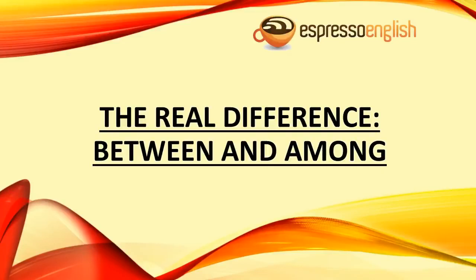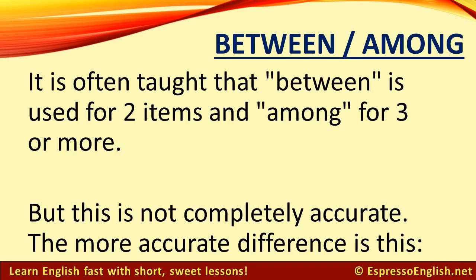The real difference between and among, from Espressoenglish.net. It is often taught that between is used for two items and among for three or more. But this is not completely accurate. The more accurate difference is this.